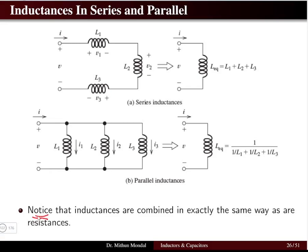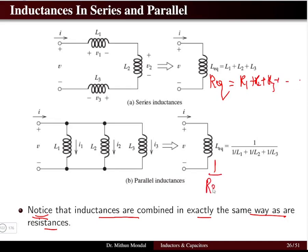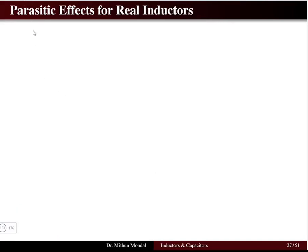We notice that inductances are combined in exactly the same way as resistances. For resistances in series: R_eq = R1 + R2 + R3. For resistances in parallel: 1/R_eq = 1/R1 + 1/R2 + 1/R3. Inductance and resistance follow the same rules for series and parallel connections.